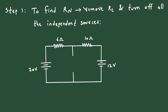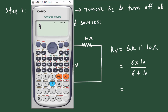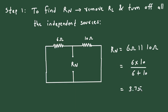Step number 1 is to remove Rl and turn off all the independent sources. This will be Rn, that is Norton's resistance. When we turn off the voltage sources they will be short circuited, because when we turn off a voltage source it becomes a short circuit. Therefore Rn equals: the 6 ohm and 10 ohm are connected in parallel, so it will be 6 multiplied by 10 divided by 6 plus 10, which equals 3.75 ohm.